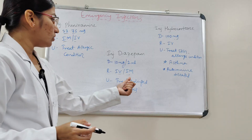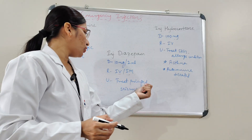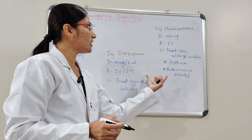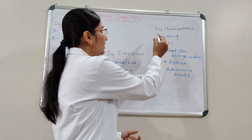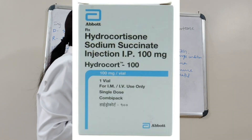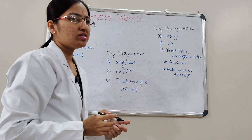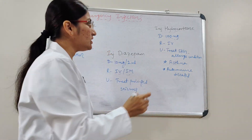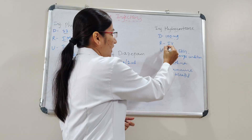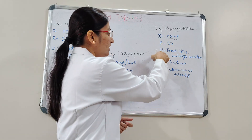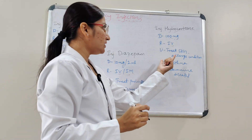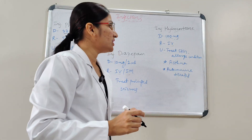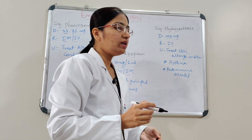The next injection is Hydrocortisone. The dosage is 100 mg, route is intravenous. It is used to treat skin allergy conditions as well as asthma, and it is also used in autoimmune diseases.